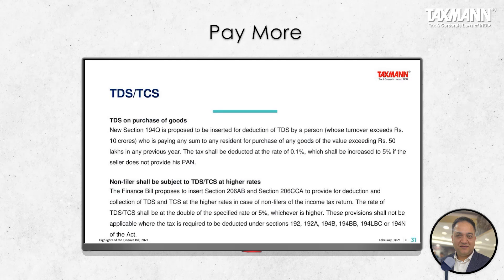Under new provisions, non-filers of income tax returns shall also be subject to higher rates of TDS and TCS — in addition to the existing PAN-based higher rate provisions under Sections 206AA and 206CC. The Finance Bill proposes that if the deductee or collectee has not filed their income tax return for the specified prior years, the tax shall be deducted or collected at a higher rate, expanding the ambit of the compliance net.